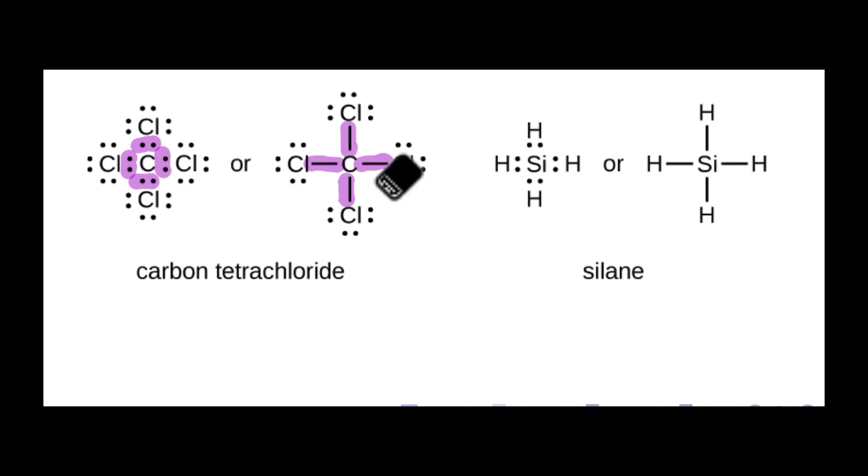Keep in mind, each one of these lines represents a pair of electrons, represents two electrons. The same thing happens in silane, SiH4. The silicon has eight total electrons around it. We can see that in this representation with two dots for each bond or a line for each bond, an octet of electrons around the silicon.